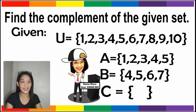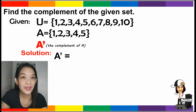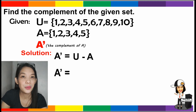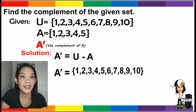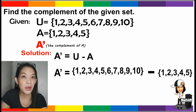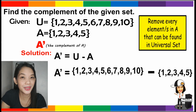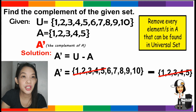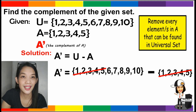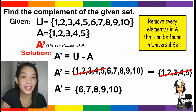While set C is an empty set. To get the complement of A, we compute universal set minus set A. We must list the elements of the universal set which are 1 to 10, then subtract the elements of set A which are 1, 2, 3, 4, and 5. We must remove every element in A that can be found in the universal set. Therefore, the complement of A will be 6, 7, 8, 9, and 10.